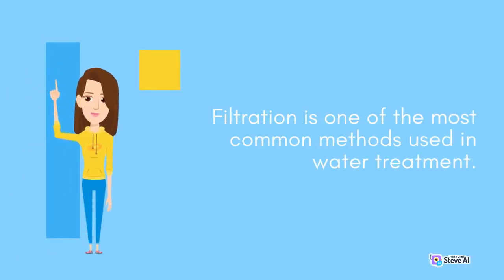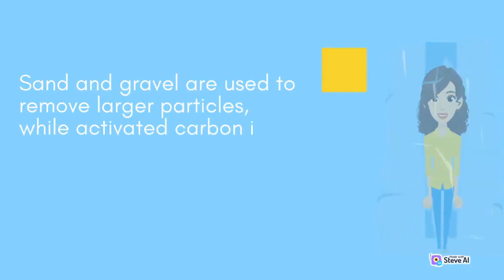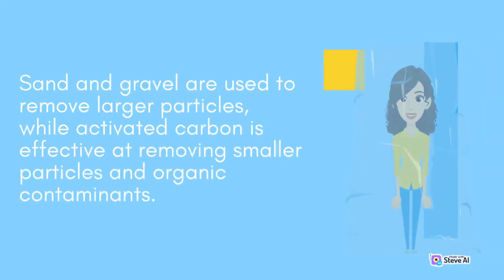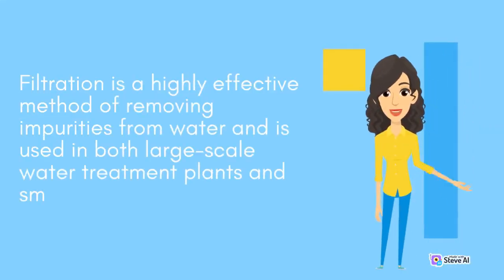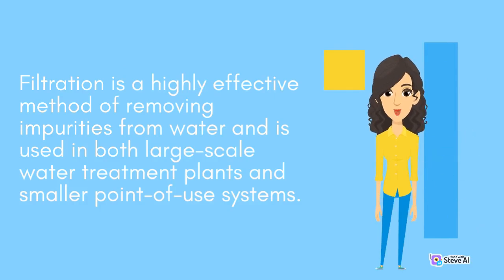Filtration is one of the most common methods used in water treatment. Inorganic compounds such as sand, gravel, and activated carbon are used to remove impurities from water. Sand and gravel are used to remove larger particles, while activated carbon is effective at removing smaller particles and organic contaminants. Filtration is a highly effective method and is used in both large-scale water treatment plants and smaller point-of-use systems.